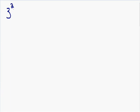So in my previous video, I went over basic examples like 3 squared, and that 2 exponent just means that we multiply 3 by itself 2 times. 3 times 3 is equal to 9, so 3 squared is equal to 9.